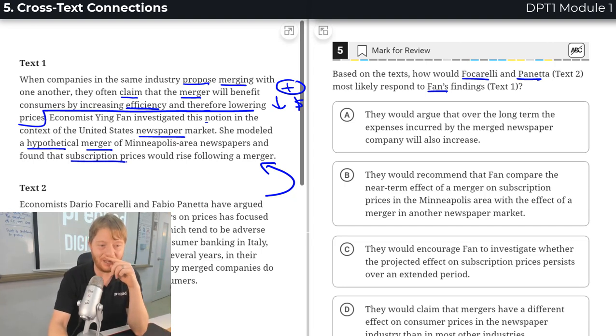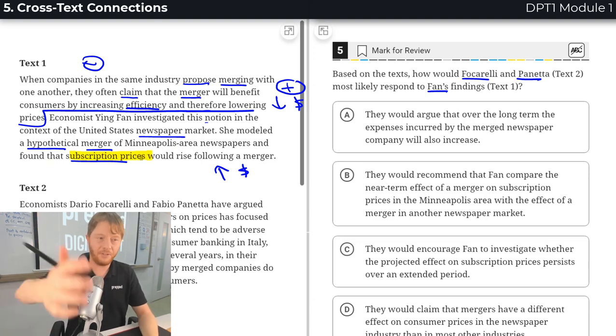and she found, uh-oh, actually, subscription prices would rise. That's completely the opposite of what they had predicted. Okay, so basically the idea in passage text one is that the merger is not going to be good. The merger is going to cause prices to rise. Hopefully that's what you read too.